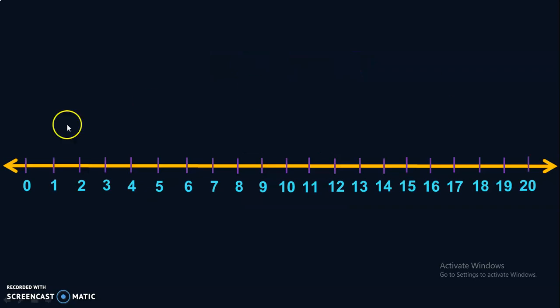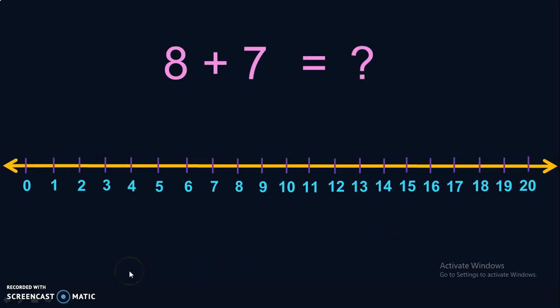This is a number line with numbers 0 to 20. Let us add 8 plus 7. First, locate the number 8 in the number line. Then, move in the forward direction 7 times because we have to add 8 plus 7. Each time you make one jump, you move ahead by one number — that is what we mean by equal intervals.